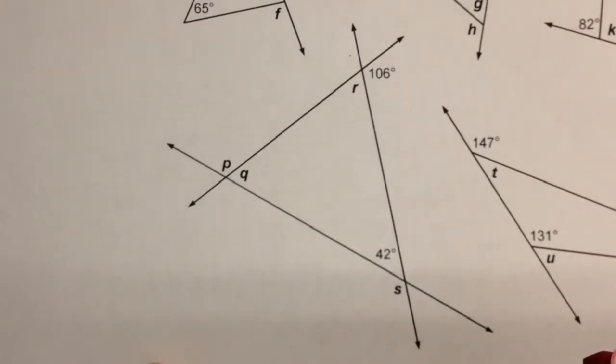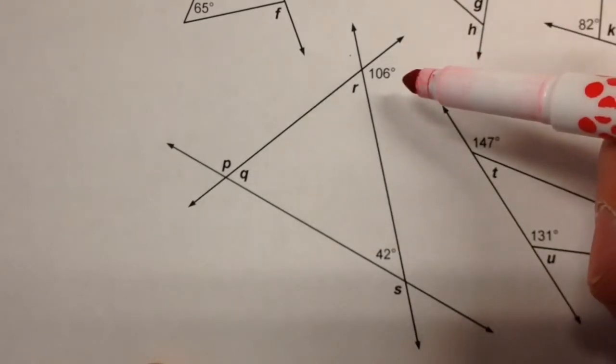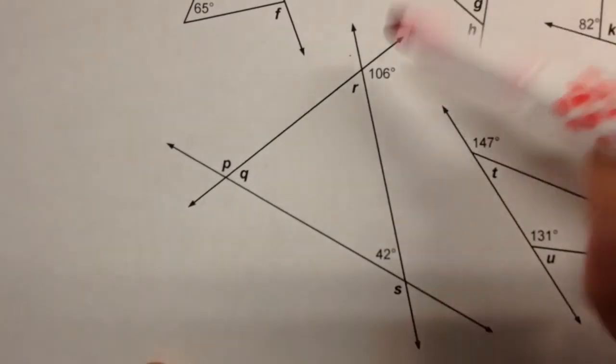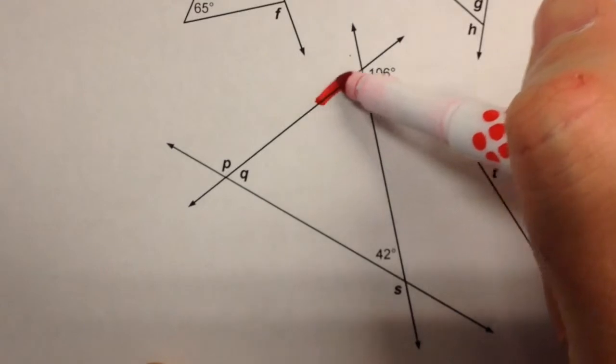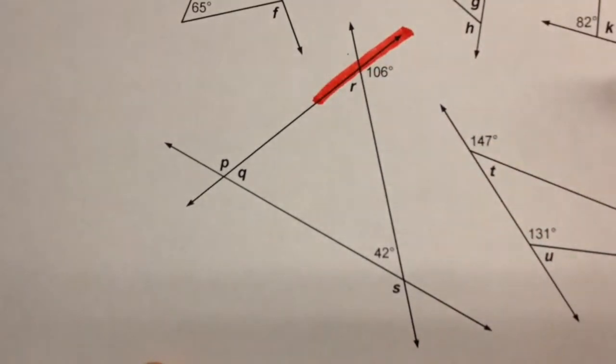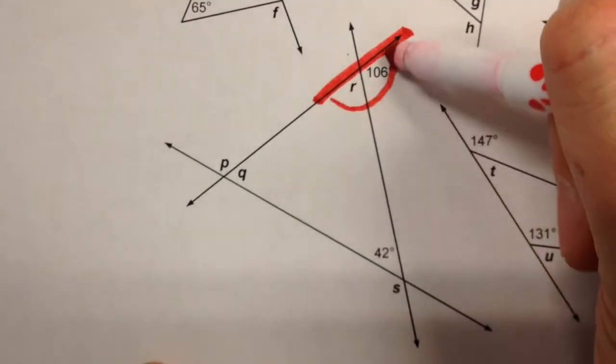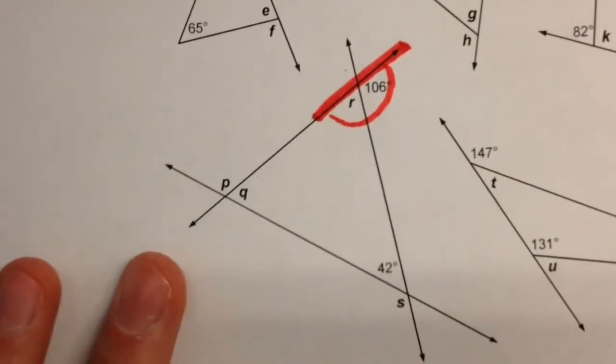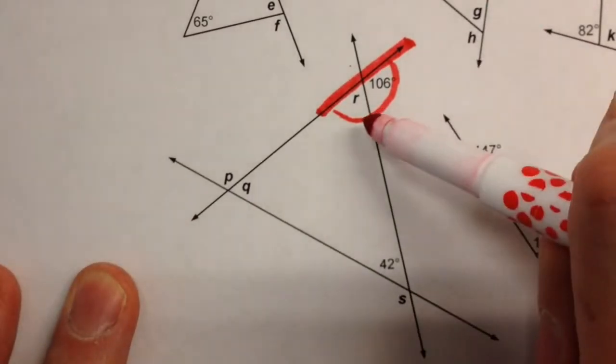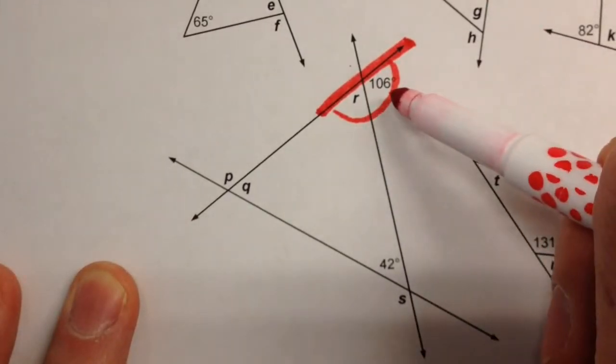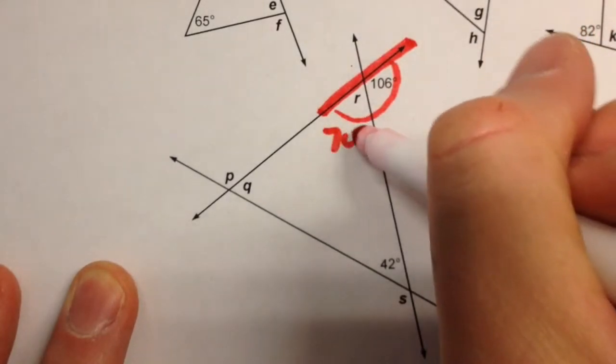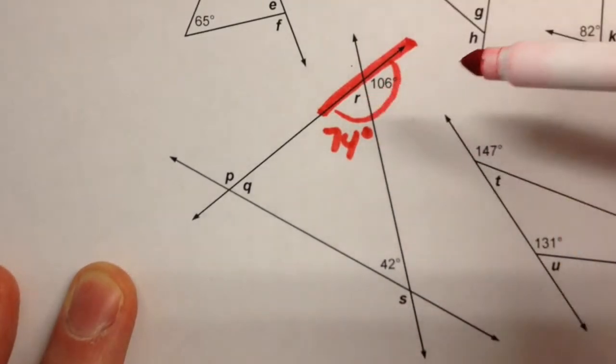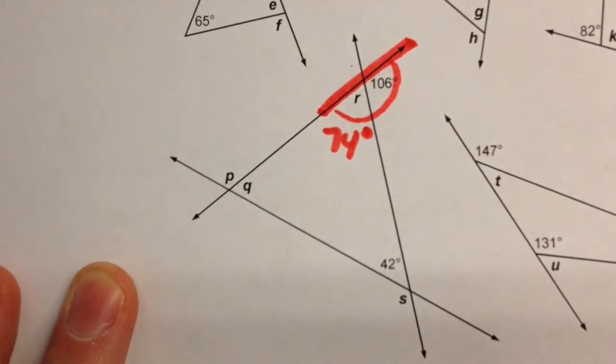Let's start with the angles we do know. For example, we know this angle is 106 degrees. Using what we learned yesterday, that angles that form a straight line are 180 degrees, we can determine what angle R is. 106 plus 74 degrees would equal 180, so angle R must be 74 degrees.